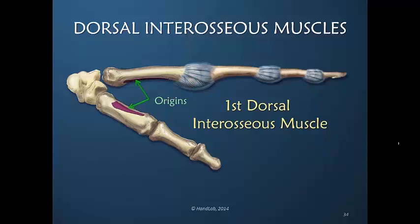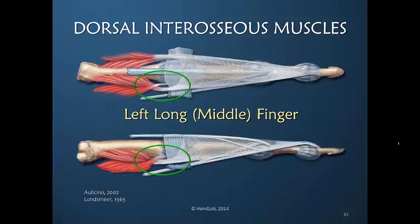The origins of the first dorsal interosseous muscle are very similar to the origins of the other dorsal interosseous muscles in that they are significant in their length over the metacarpal. If we look at the left long finger again and think of the crossover of these two bellies, one of these muscle-tendon units extends into the length of the finger, needing more excursion than the muscle belly that just inserts just distal to the metacarpophalangeal joint.